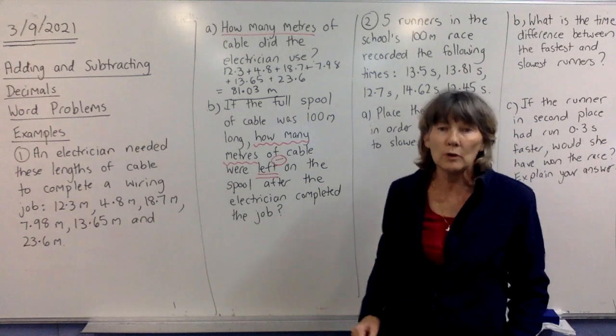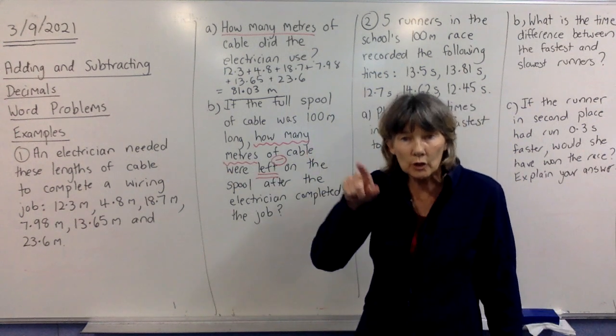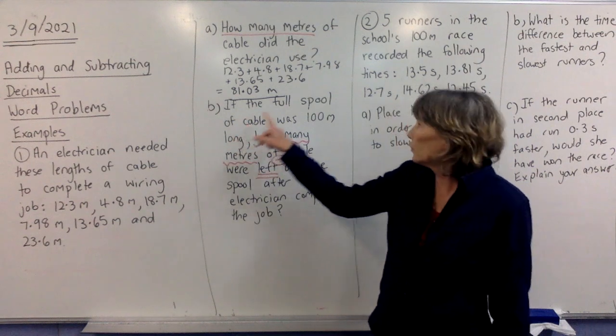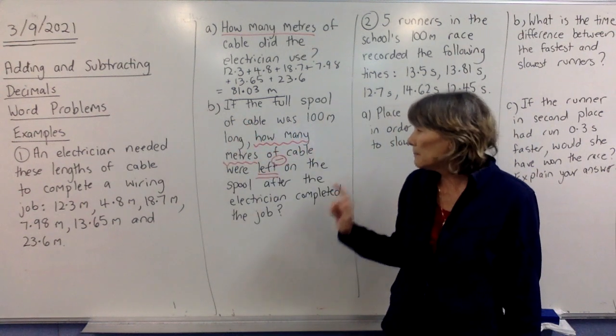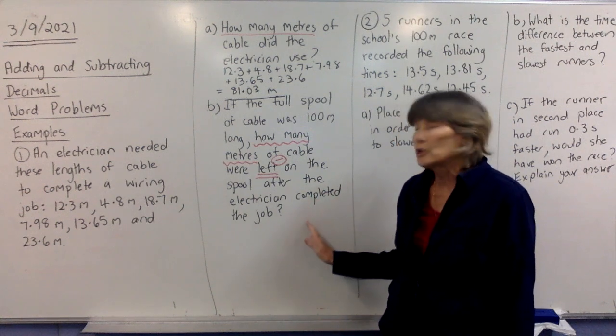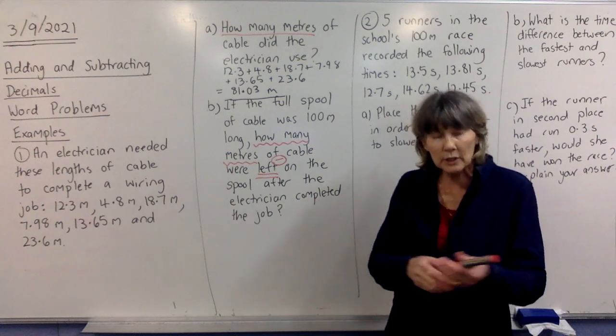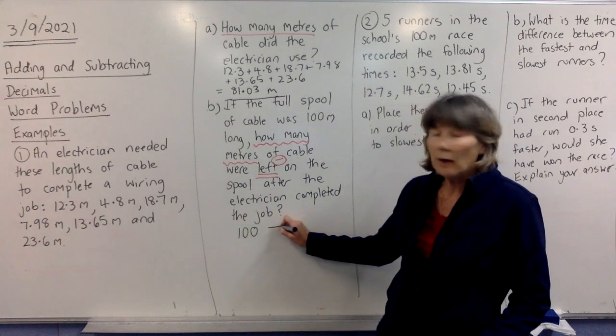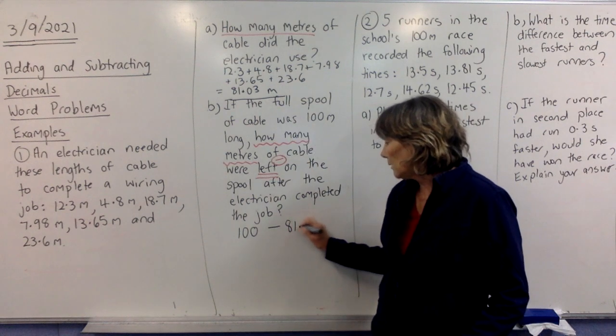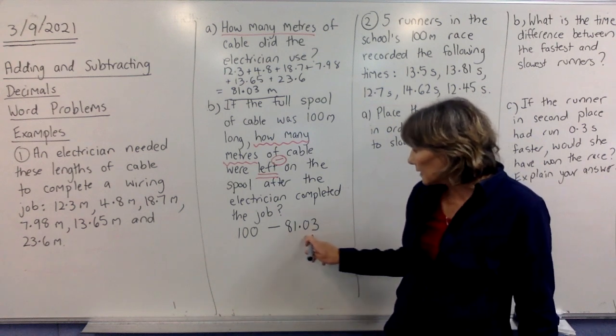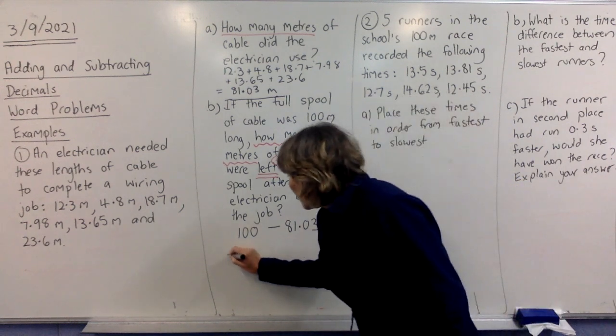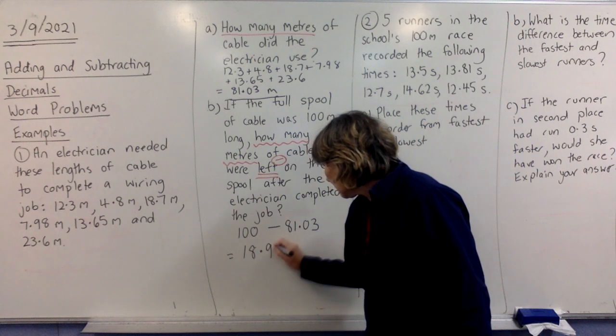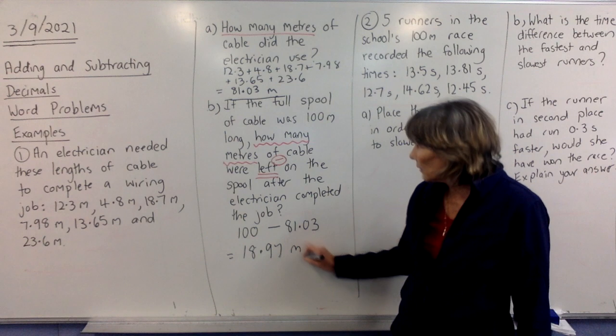So, anything I do here, you should have in your workbook. Whatever I'm doing in red here, you should have in red a pen on your workbook. So, the word left tells you you're going to be subtracting. So, I'll read it again. If the full spool of cable was 100 metres long, how many metres of cable were left on the spool after the electrician completed the job? So, what you've got is 100 metres to begin with. He's come to the job at 100 metres, ready to go. We're going to take off what he used. He used 81.03 metres. So, we're going to take that off and whatever's left is what's left. So, now you can go to your calculator and type that in. And if you do that, you should end up with 18.97. And then you're going to write metres on the end and that's it, finished.